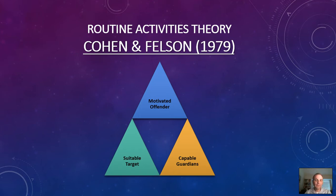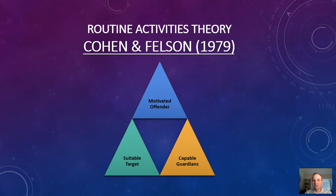Cohen and Felson developed routine activities theory in 1979, and it has three significant propositions. First, there is the motivated offender — that can essentially be anybody. One limitation of this theory is that it doesn't really get into motivation or explain the underlying why; motivation is treated as an assumed constant. Second is access to a suitable target — which could be your cell phone, a vehicle, a television, a laptop, any of these things.